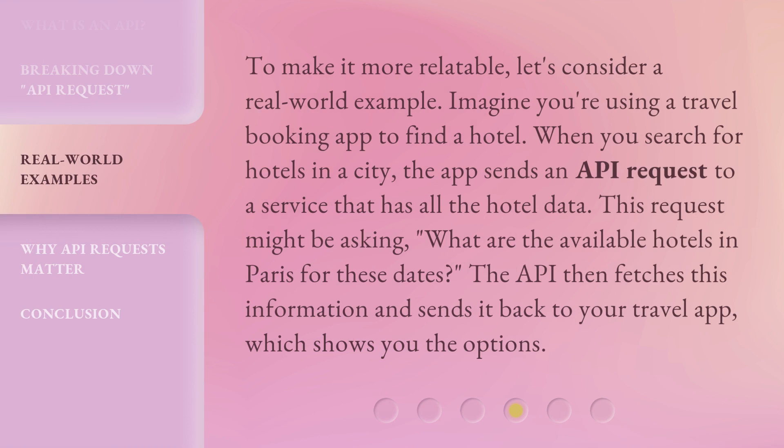To make it more relatable, let's consider a real-world example. Imagine you're using a travel booking app to find a hotel. When you search for hotels in a city, the app sends an API request to a service that has all the hotel data. This request might be asking: what are the available hotels in Paris for these dates? The API then fetches this information and sends it back to your travel app, which shows you the options.